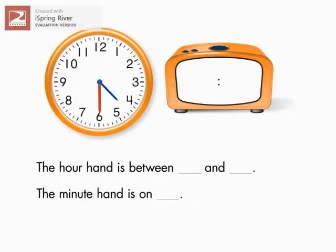In this problem, time is shown on an analog clock, and students are asked to write the numbers to complete each sentence and then to write the time on the other clock. This problem is key because it requires students to tell time to the half hour.